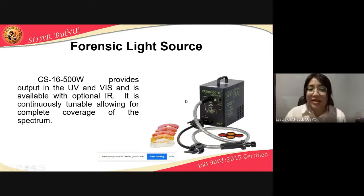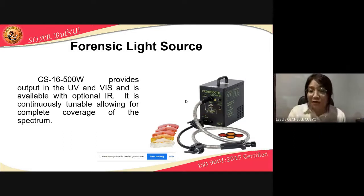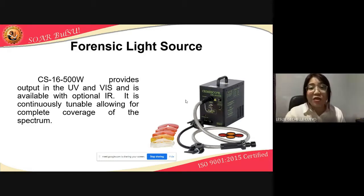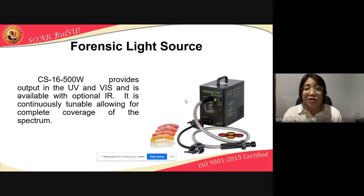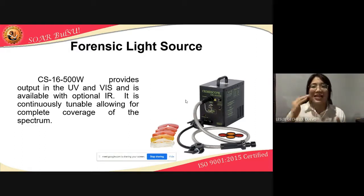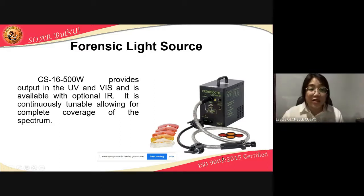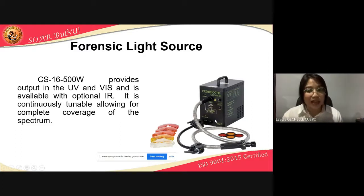One example of a forensic light source is the CS-16, 500 watts. It provides output in the UV and VIS and is available with optional IR or infrared radiation. It is continuously tunable, allowing for complete coverage of the spectrum — ibig sabihin, lahat ng nasa electromagnetic spectrum ay masasakop nitong light source. Gagamitan mo lang ng iba't ibang uri ng filters, kaya malaking tulong yan habang nagko-collecta ka pa lang ng ebidensya doon sa crime scene.